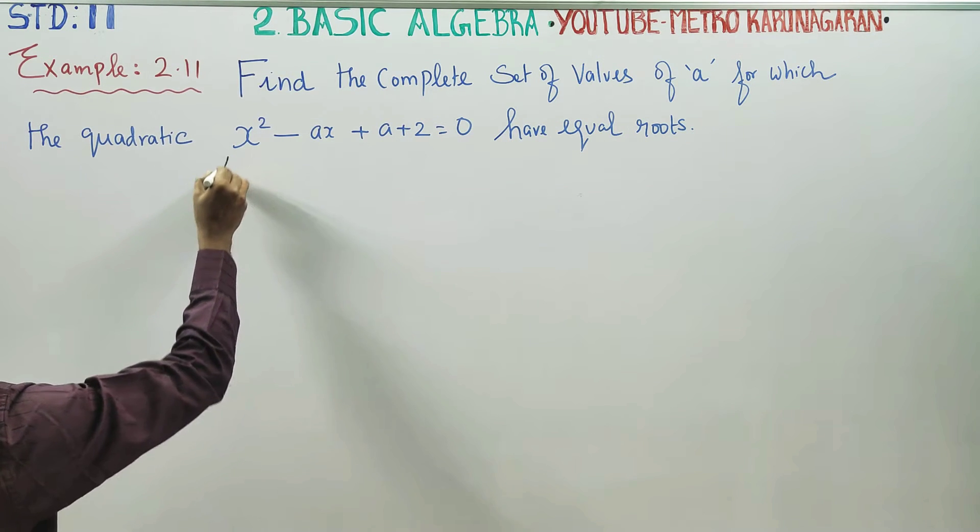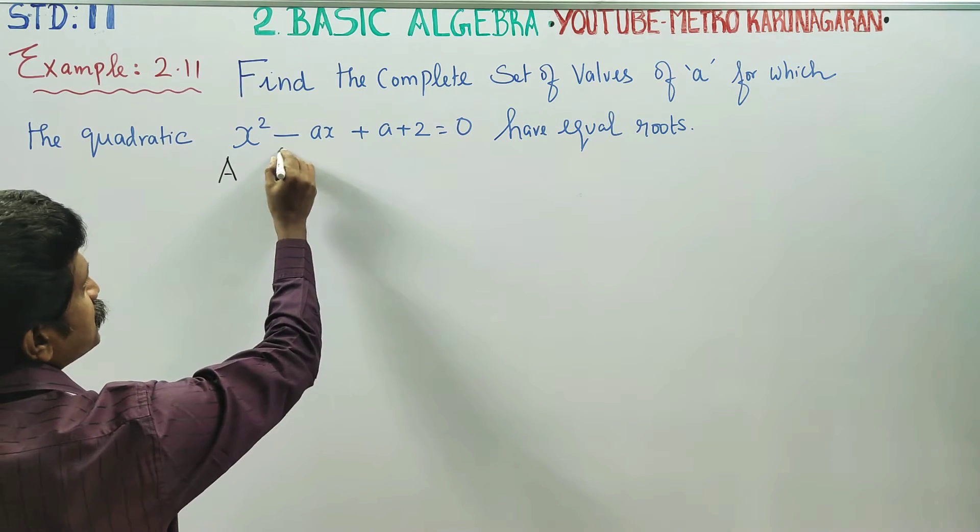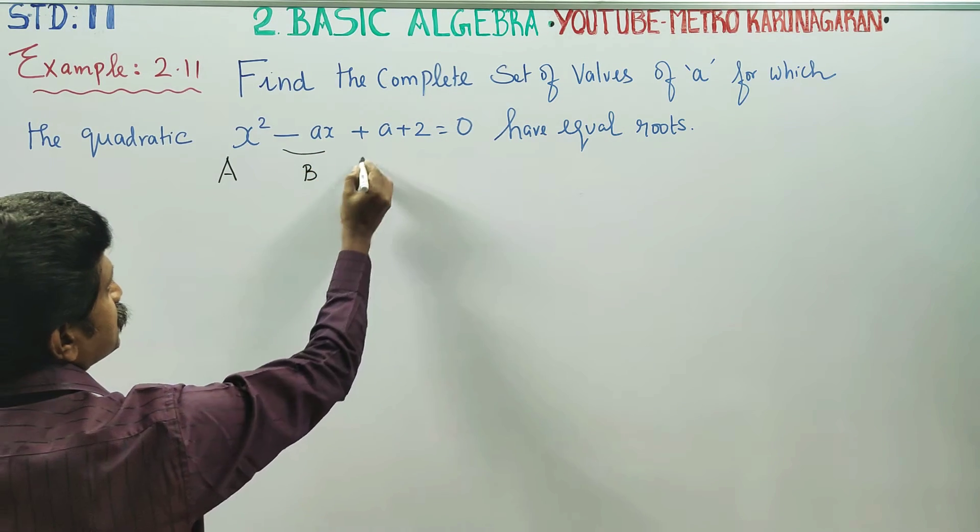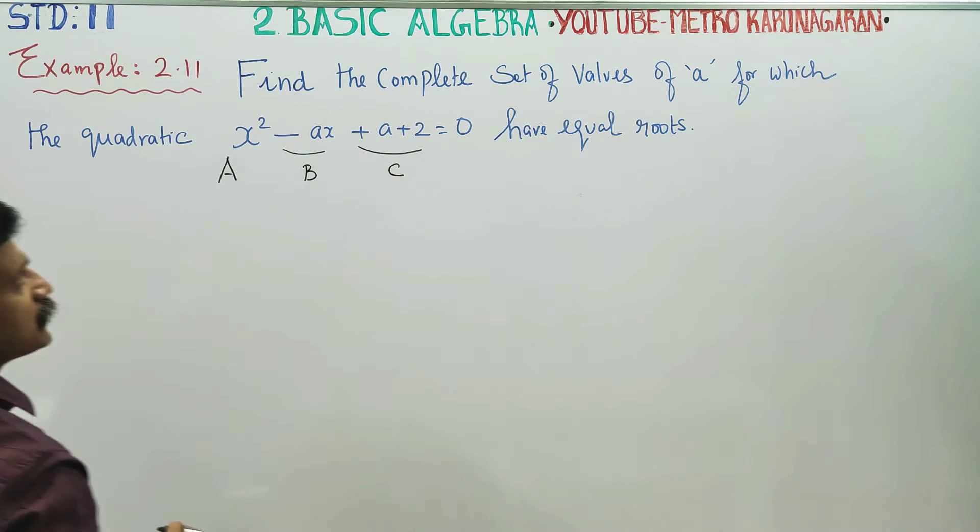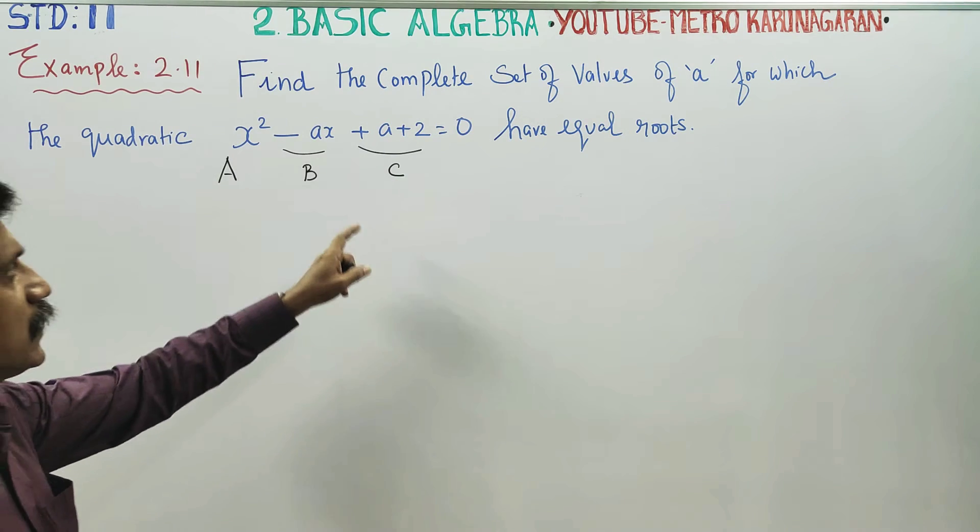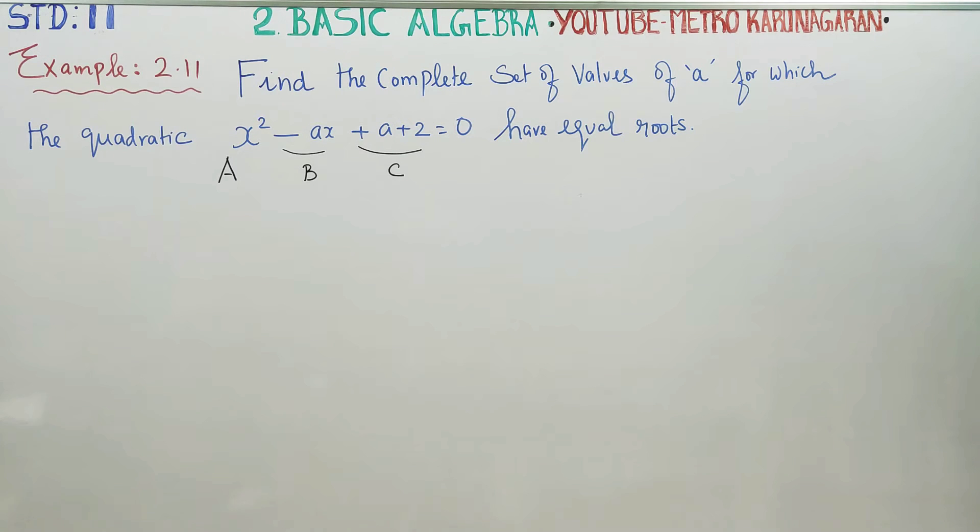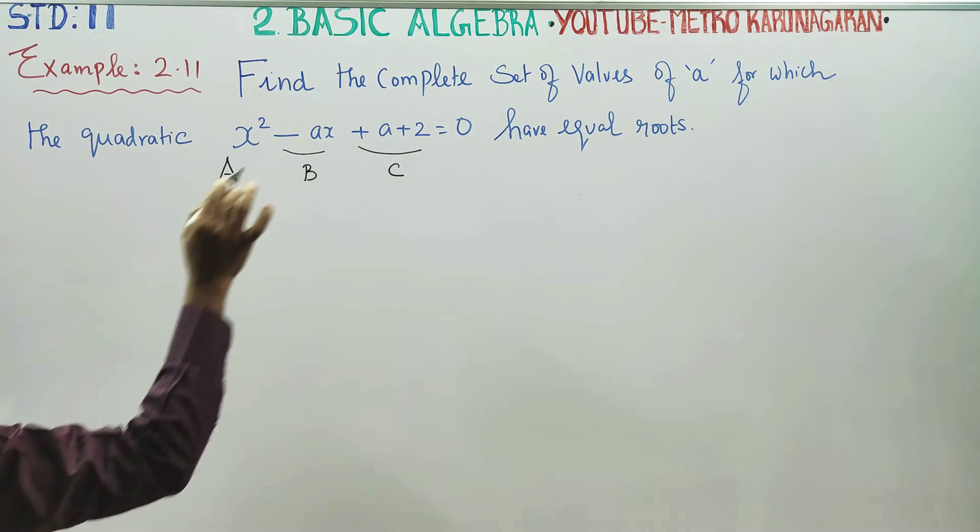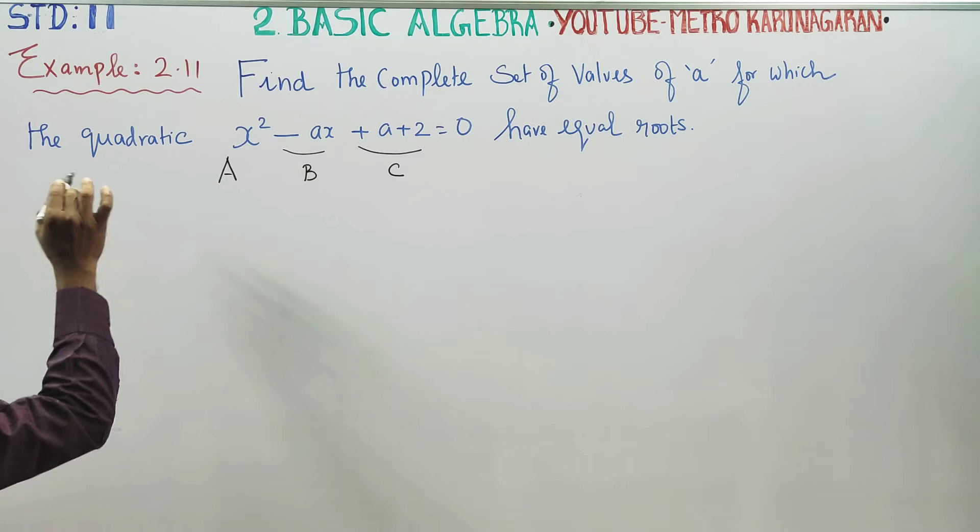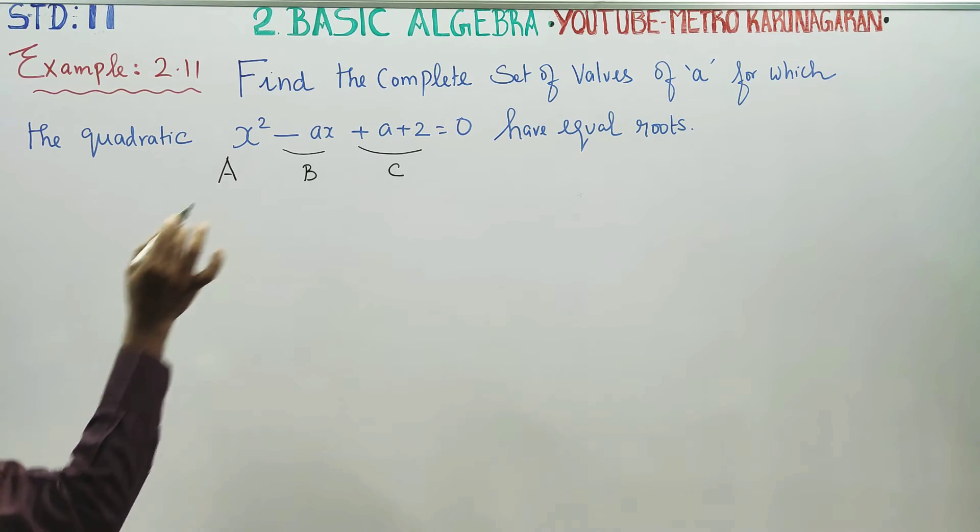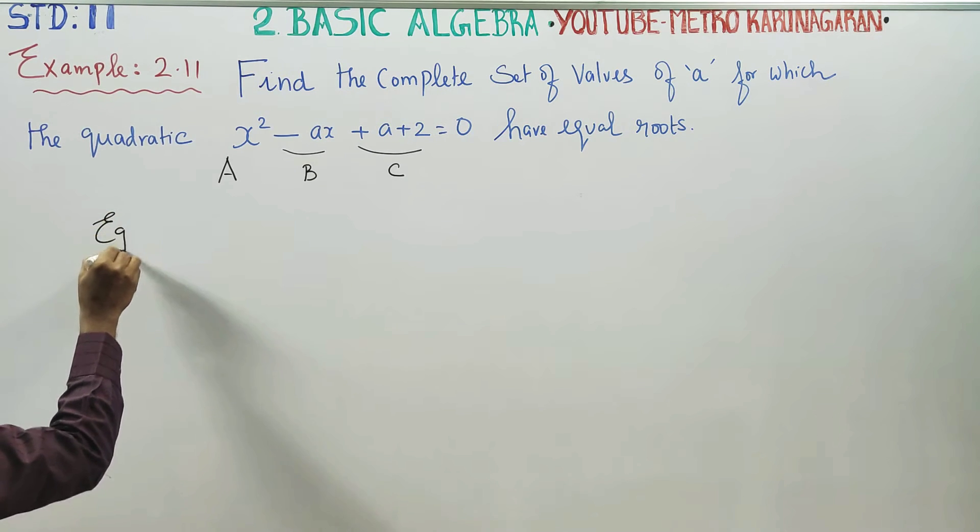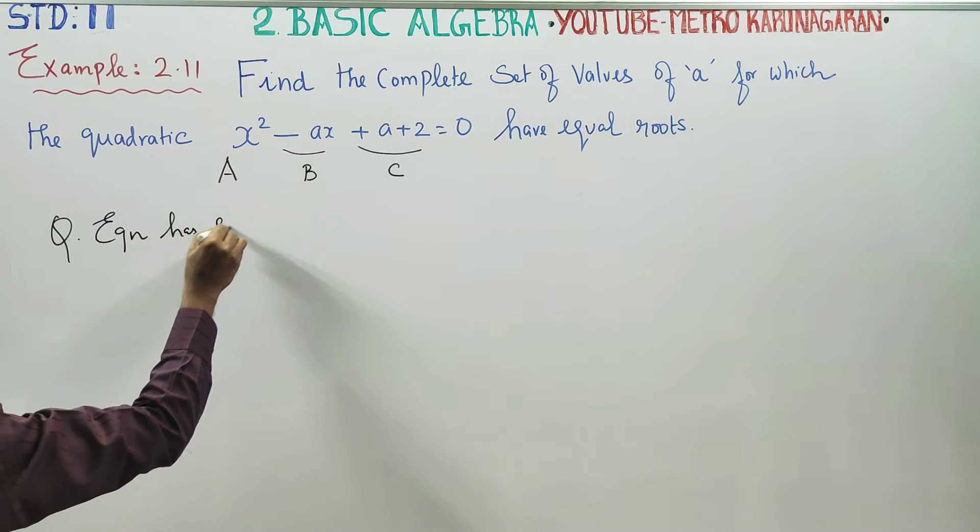Coefficient of X² is capital A, coefficient of X is capital B, and constant is C. Now we have capital ABC notation. For equal roots, the quadratic equation has equal roots.